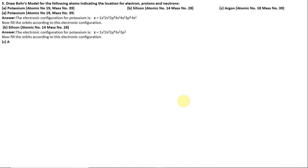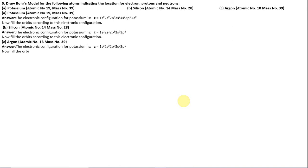C — Argon, atomic number 18, mass number 40. The electronic configuration is 1s2, 2s2, 2p6, 3s2, 3p6. Filling the orbits: 1st shell has 2 electrons, 2nd shell has 8, and 3rd shell has 8 electrons.